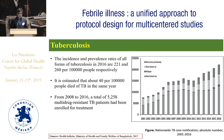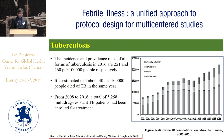Regarding tuberculosis, the incidence and prevalence rates of all forms of TB, according to a 2016 study, were 221 and 260 per 100,000 people respectively. During that time, 440,000 people died of tuberculosis. A concern is that from 2008 to 2016, more than 5,000 multidrug-resistant TB patients were enrolled for treatment. Looking at the figure, all forms of tuberculosis show an increasing trend, including extra-pulmonary, smear-negative relapsing, and smear-negative new cases.